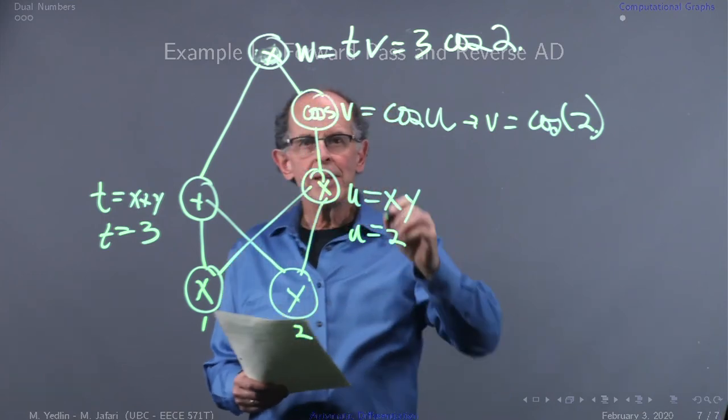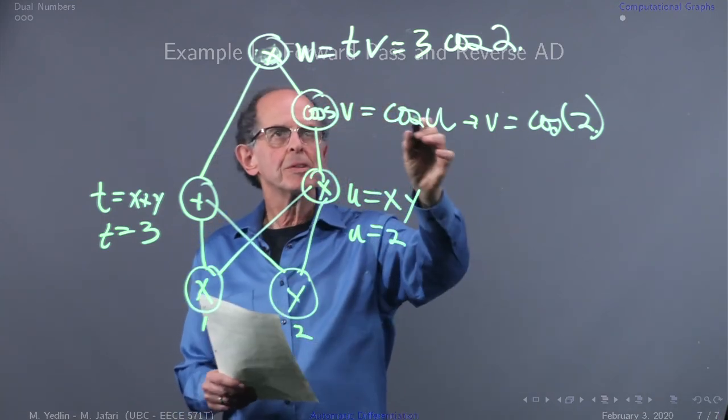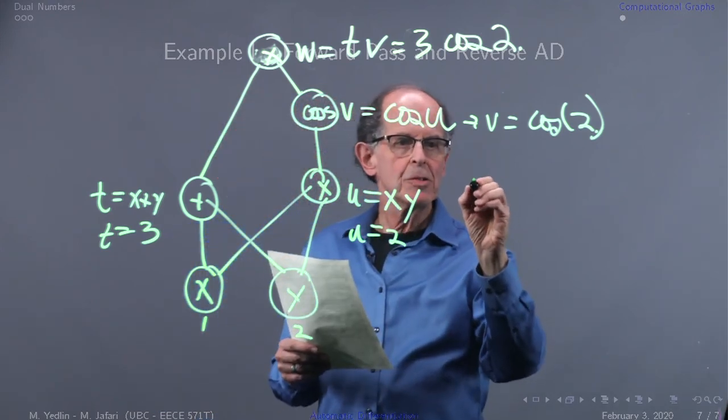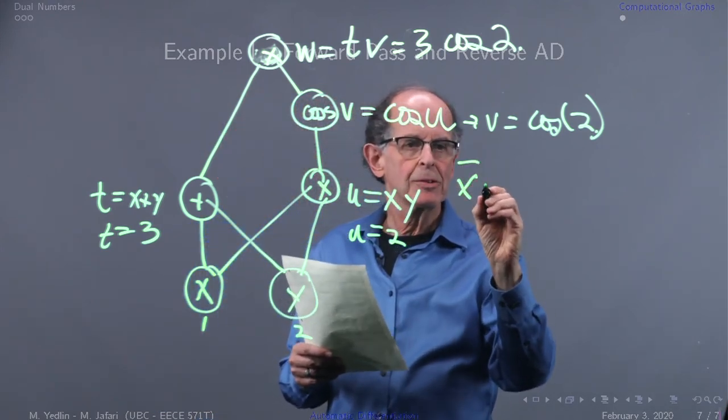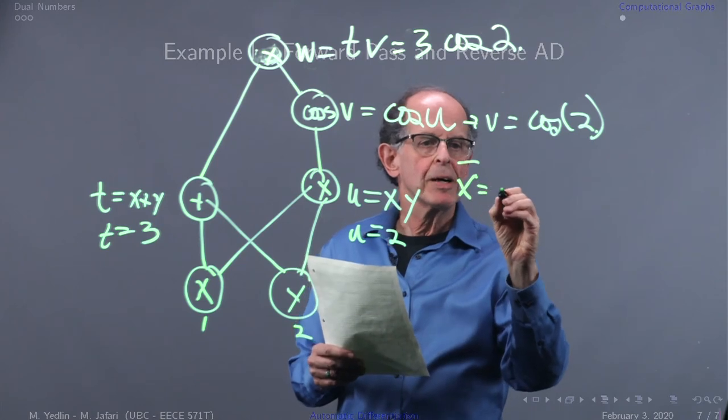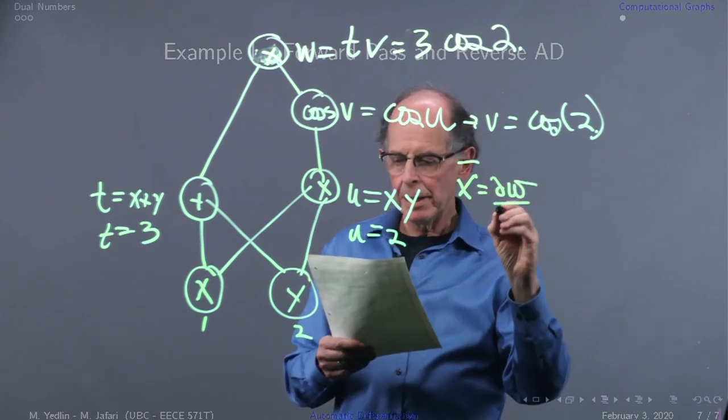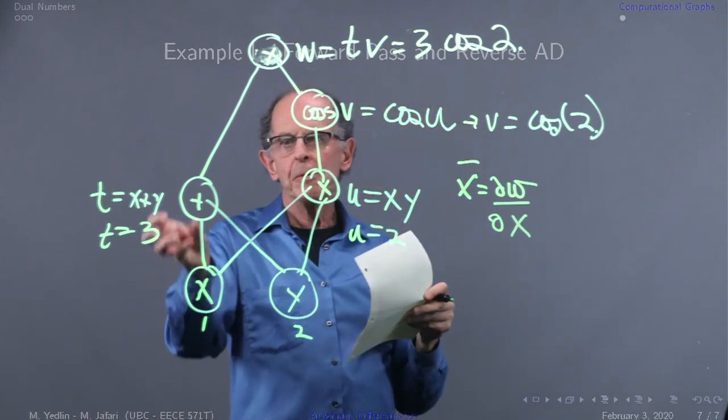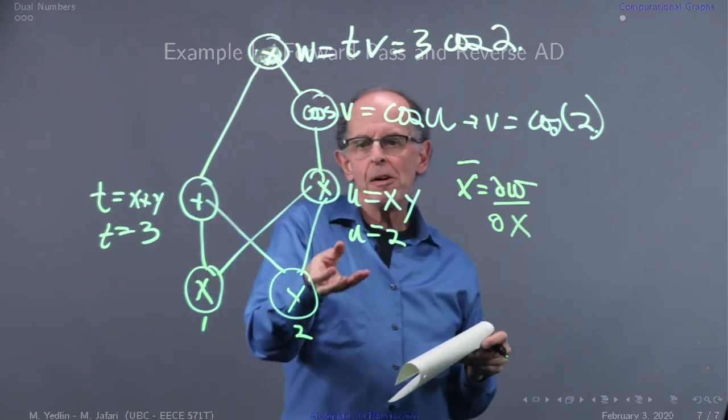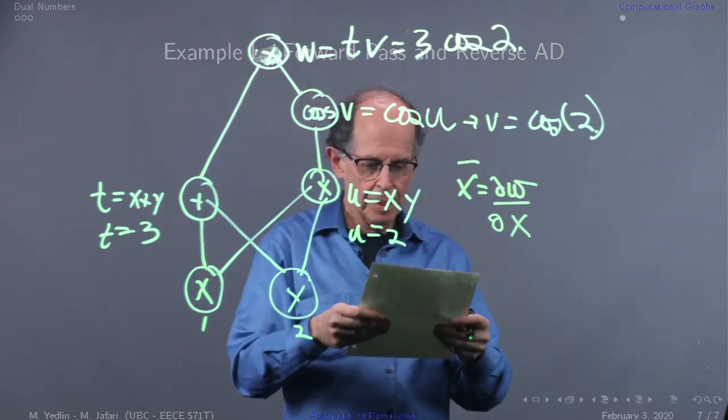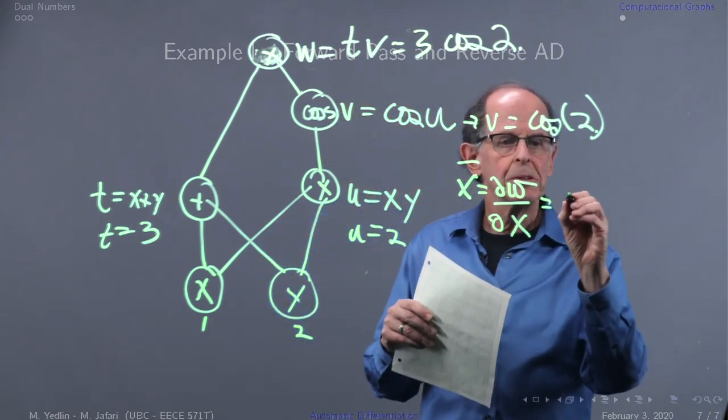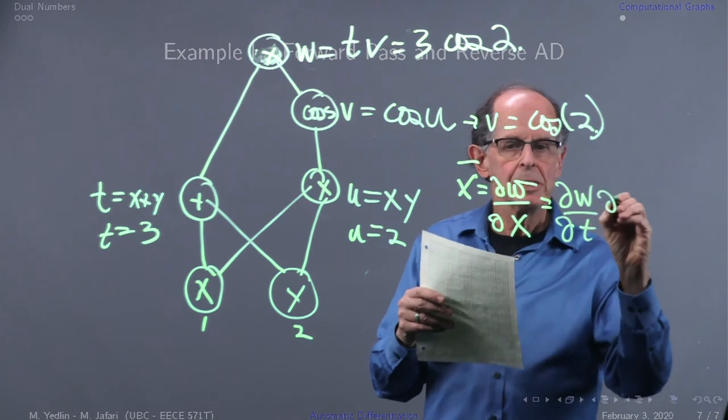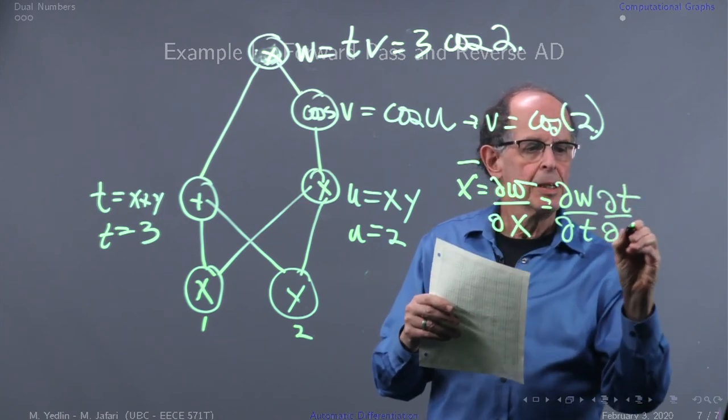Let's set this out, and it'll be an exercise for you to plug in the numbers. For example, let's do x dash. x dash is defined to be dw/dx, so there's a flow through t and a flow of x through this branch.